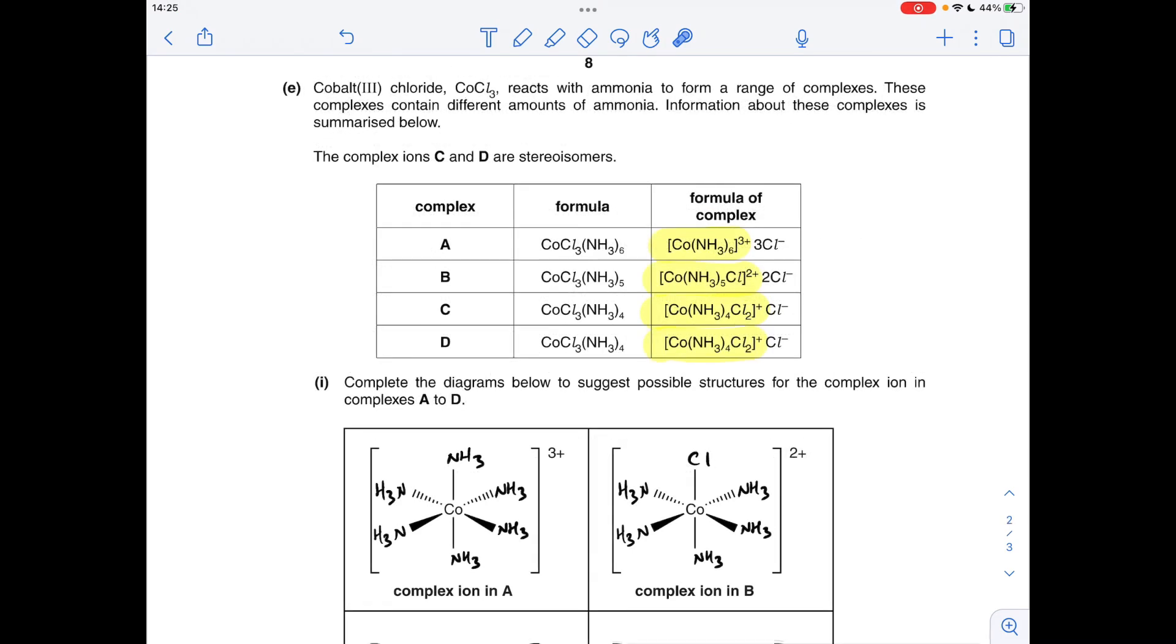Moving on to part E, we've got to suggest the structures for the four complexes A through D. You'll notice I've highlighted these parts of the complexes because that's actually what's going to appear in the diagrams. So complex A, notice as well I've already drawn them in, so I just want to explain them. So complex A, we've got six ammonia ligands, so it's got to look like that. Just be careful you connect the nitrogen to the cobalt. Just be extra careful when you do this side, so it's got to be drawn that way.